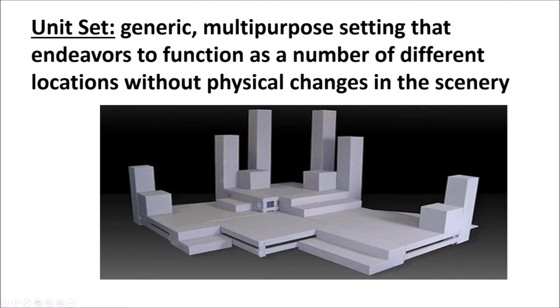A box set does not necessarily have to be uber realistic, but in most cases it is. The next type of set is called a unit set. This is a generic multipurpose setting that endeavors to function as a number of different locations without physical changes in the set itself. This is very popular with modern day Shakespearean performances — a hodgepodge of different shapes and sizes, multiple levels, but nothing distinctive to any one location or time period. What we're looking at here is a white model, so we have no idea what color this set has been painted.